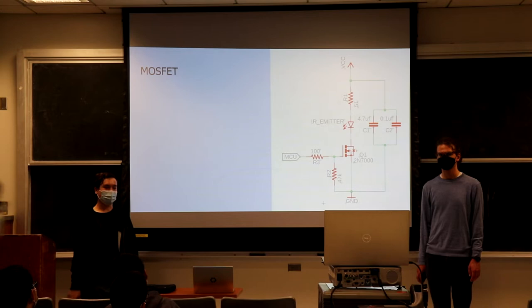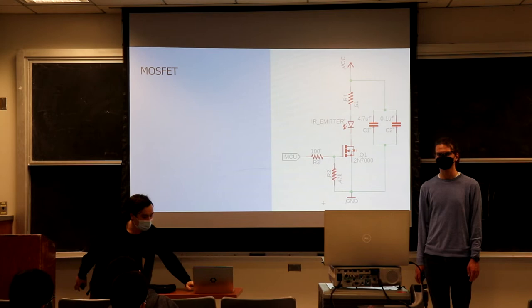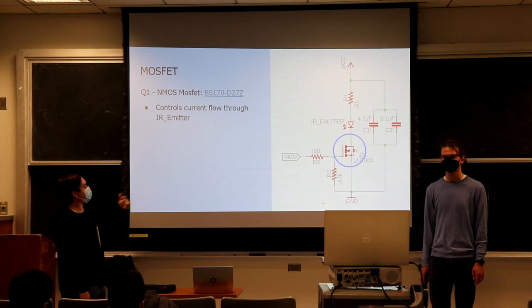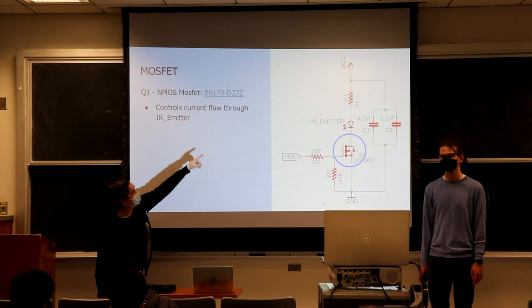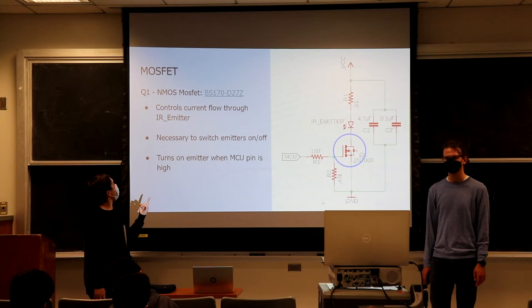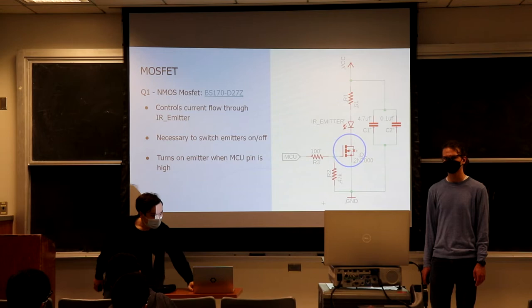Next we have our MOSFET — a special type of transistor. What it's here for is to switch the current flow on and off for our LED. It's right in the path from VCC through R1 and the LED to ground. It's going to turn it on and off — it turns on when our MCU pin is high.